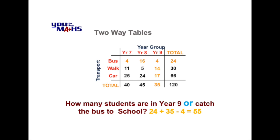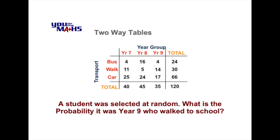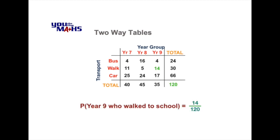The next two questions are probability questions. The first asks: if a student was selected at random, what is the probability it was a Year 9 student who walked to school? With probability we need to consider all possible outcomes — in this case all 120 students in the table. Of that 120, there are 14 who are Year 9 students who walked to school; these are the favourable outcomes. So the probability is 14 over 120.